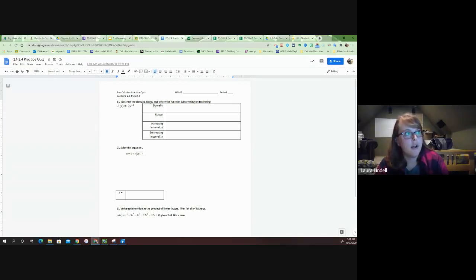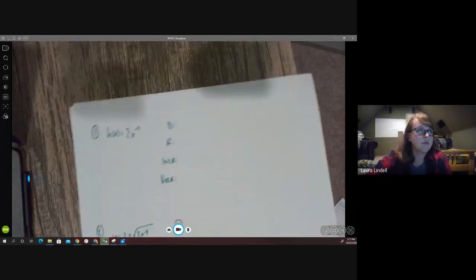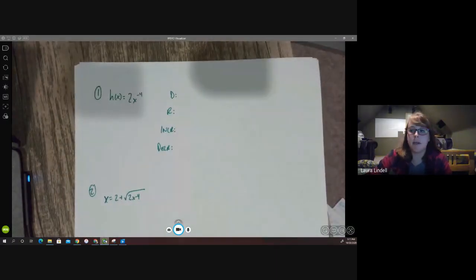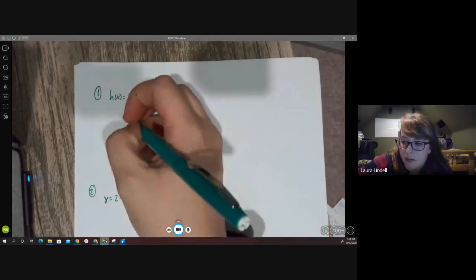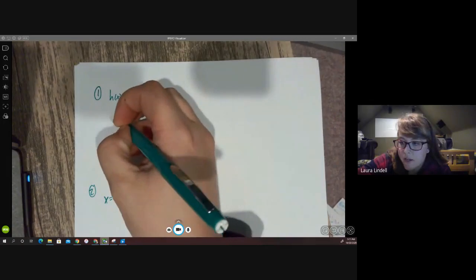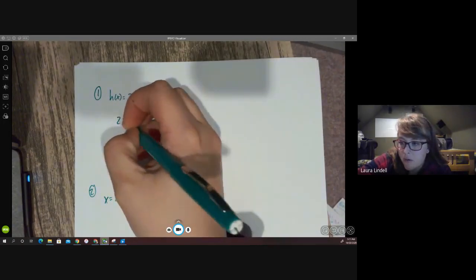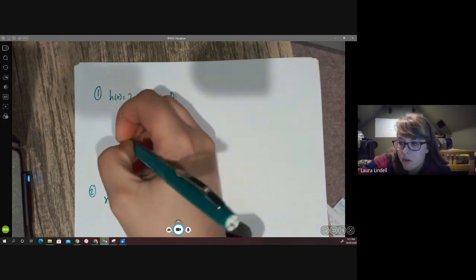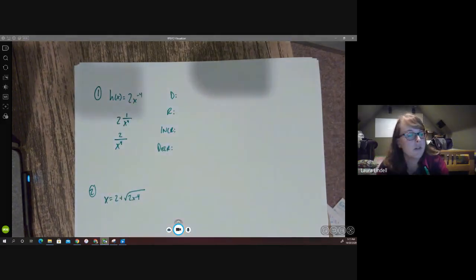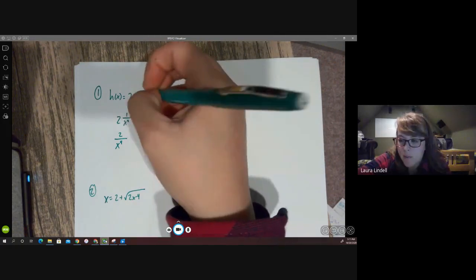So first of all, 2x to the negative fourth, if we remember our exponent rules real quick, that's going to help us out here. Because we will do this one kind of by graphing as well, but remembering that 2x to the negative fourth is like 2 times 1 over x to the fourth, or 2 over x to the fourth. Because remember, a negative exponent gets thrown into the denominator.